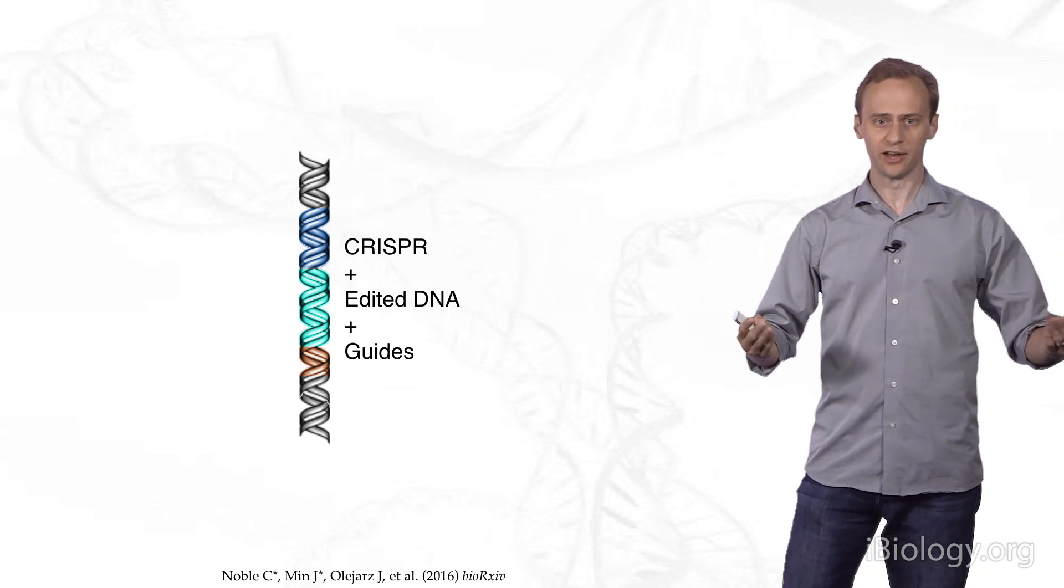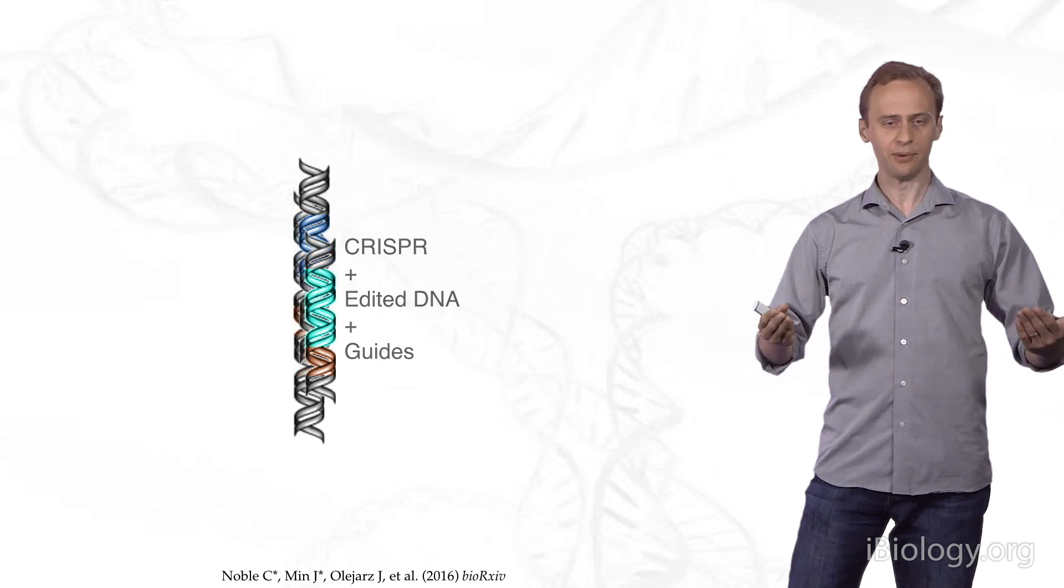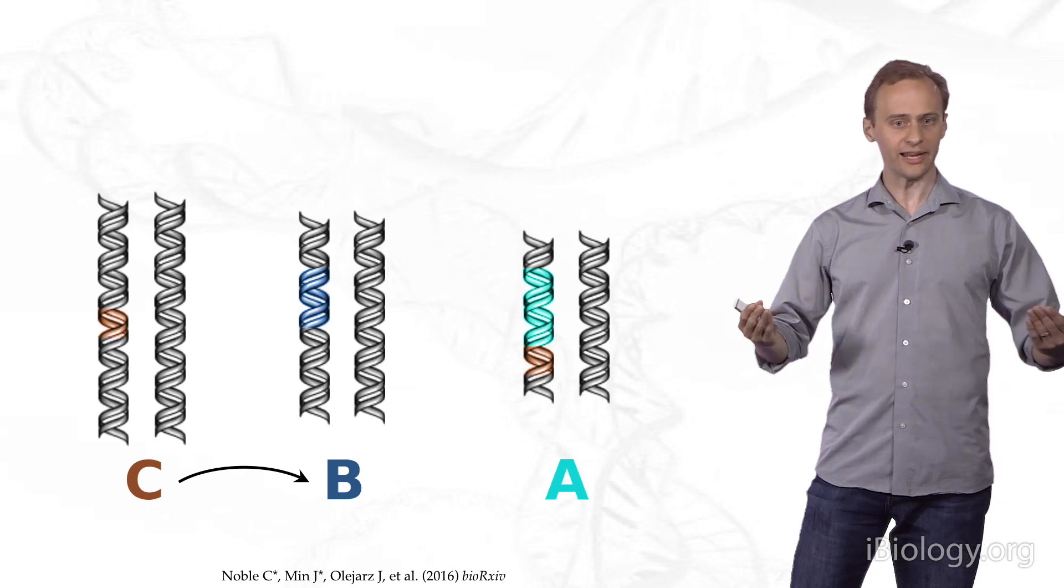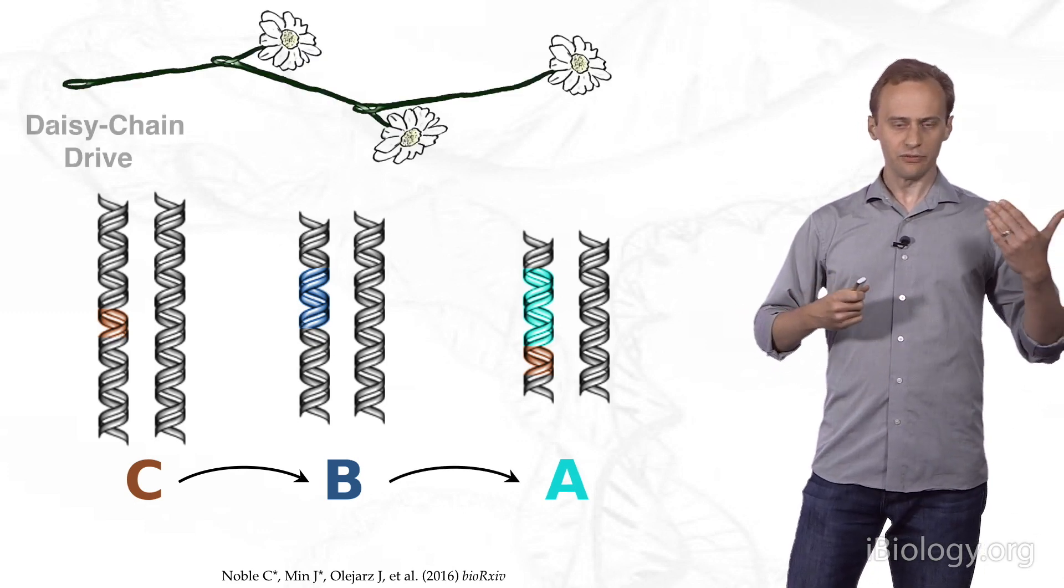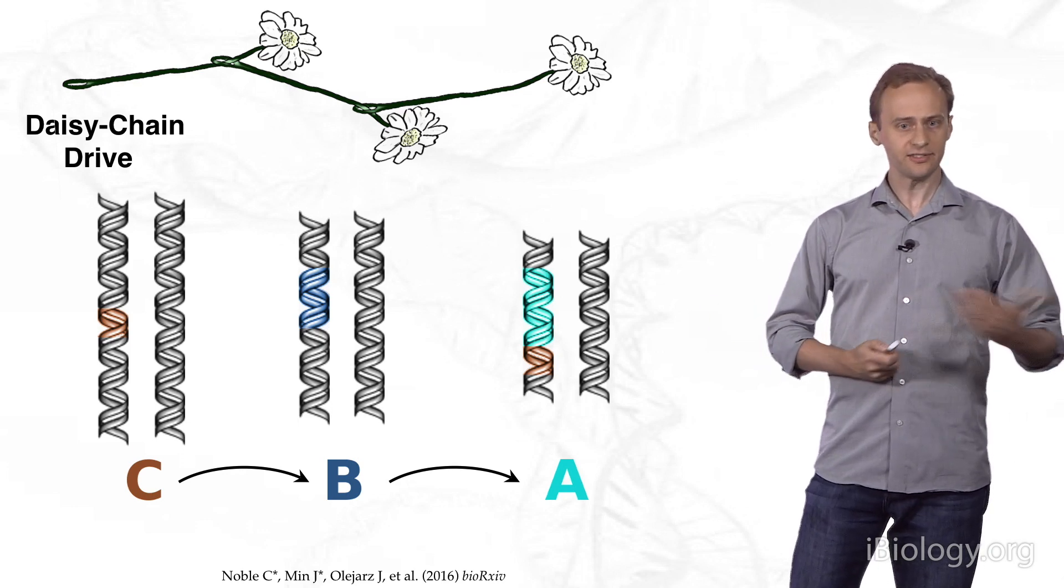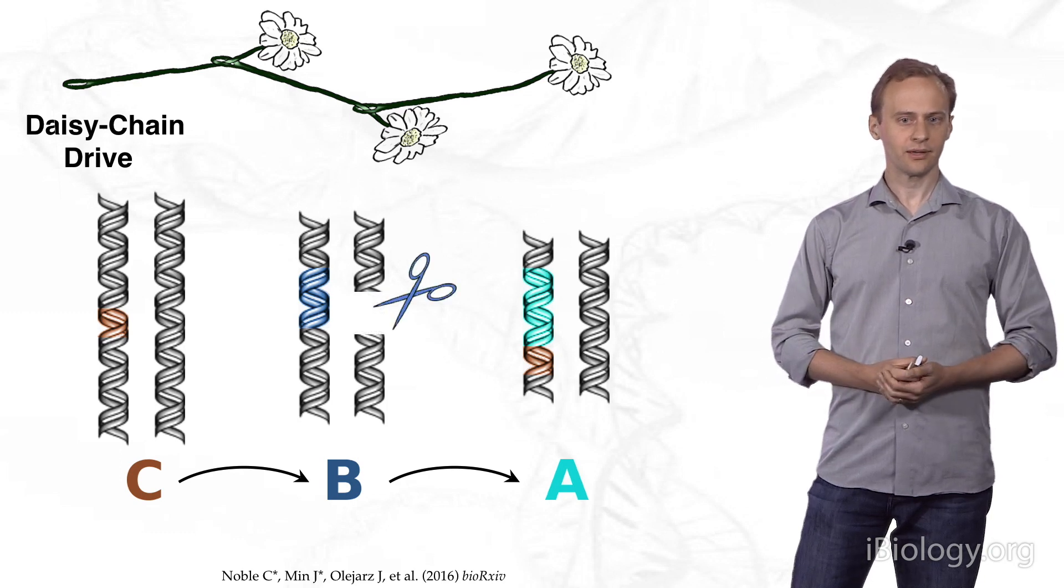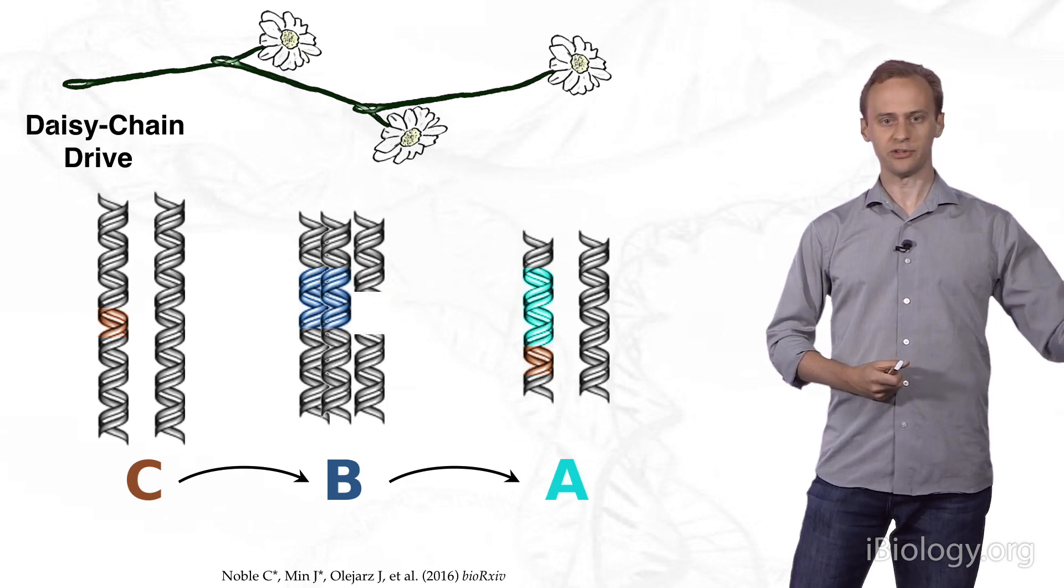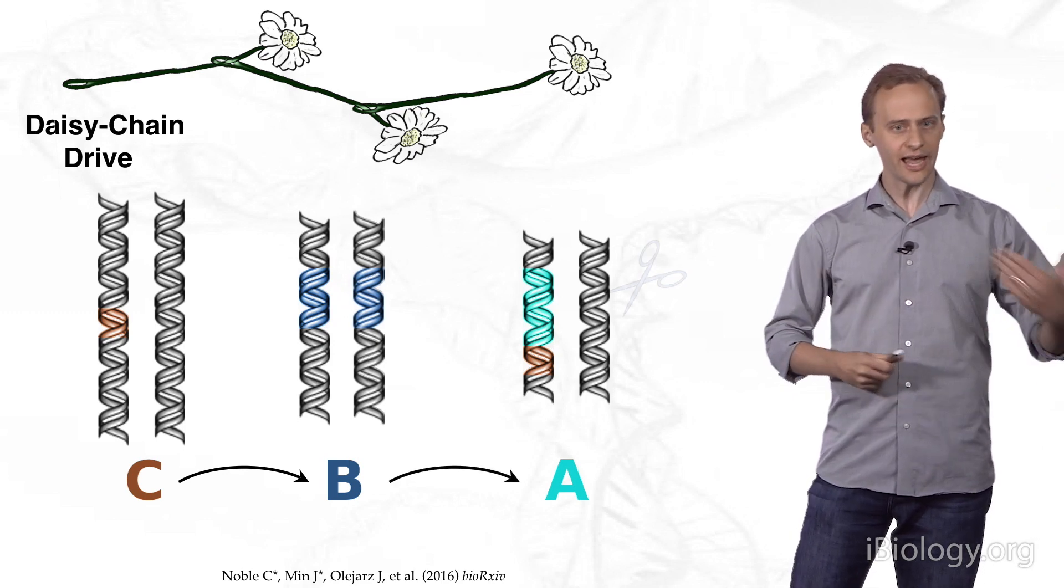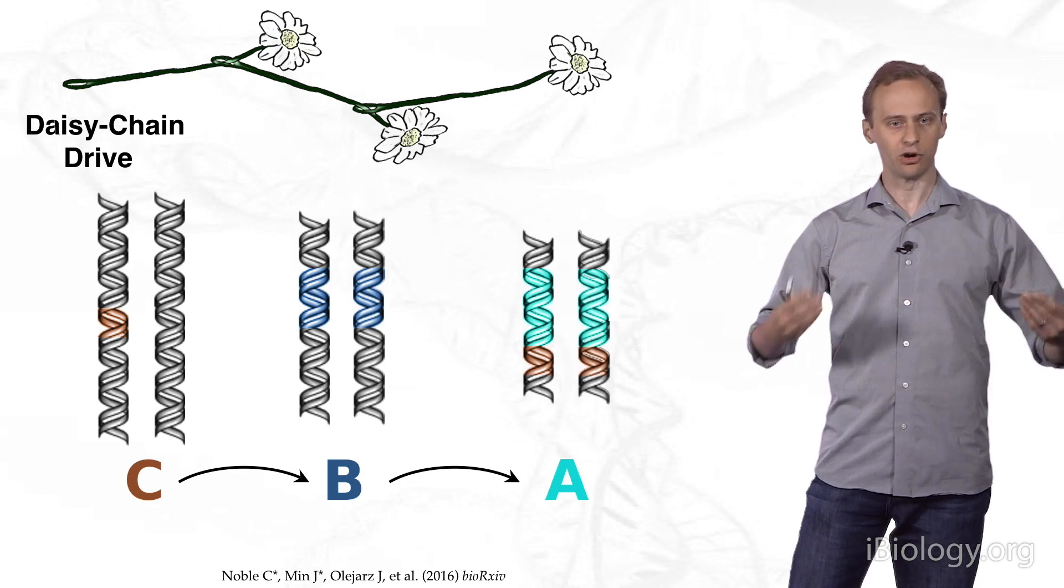How do you build such a self-exhausting drive system? My group is developing what we call DAISY drives, which separates the components of the drive system across multiple chromosomes, in ways that are linked. If you assume that a given DAISY drive has three elements, C and B and A, then C has the instructions that cause B to be copied. C tells CRISPR to cut the wild-type equivalent of B and copy it over. B has the instructions causing A to be copied. But there is nothing causing C to be copied. C is a normal engineered gene.